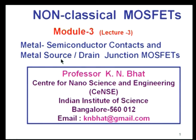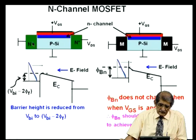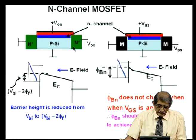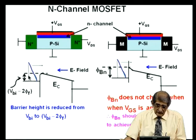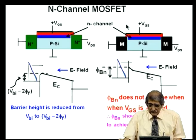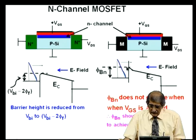We continue our discussion on Metal-Semiconductor Contacts and Metal Source-Drain junction MOSFETs. We discussed last time that in the case of the MOSFET with PN junction as the source-drain contacts, when the gate voltage is applied the entire barrier height at the source end reduces by 2φ. Because of that, electrons are able to inject across it. Whereas, in the case of Metal-Semiconductor Contacts, the barrier to the metal φBN does not change.